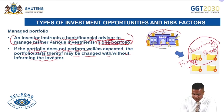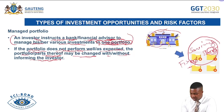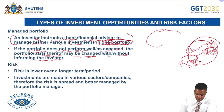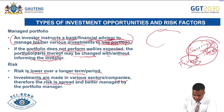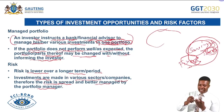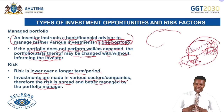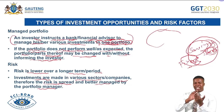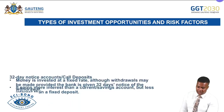The bank or financial advisor manages all these investments as one portfolio, meaning they can withdraw some money from shares and invest more in savings or fixed deposits as needed. The risk associated with managed portfolios is lower over the long term. Investments are made in various sectors or companies, therefore the risk is spread and better managed by the portfolio manager. If one part of the portfolio is not doing well, the others will not be affected.